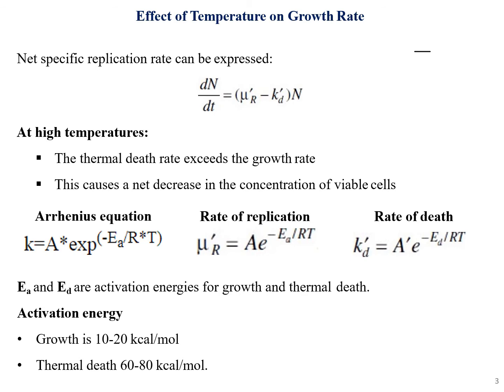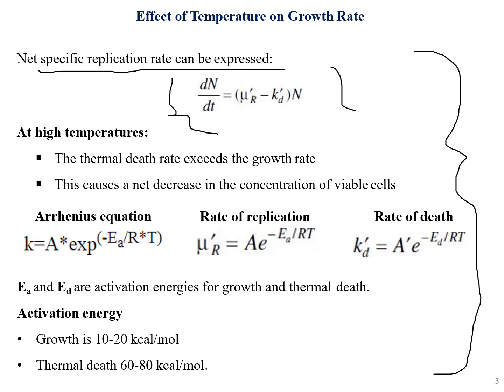Moving on, the net specific replication rate can be expressed as: dN/dt = μr minus kd times N, where N is the number of organisms. For temperature dependence, the net specific replication rate is expressed as dN/dt = μ'r minus μ't times N. At high temperatures, the thermal death rate exceeds the growth rate.